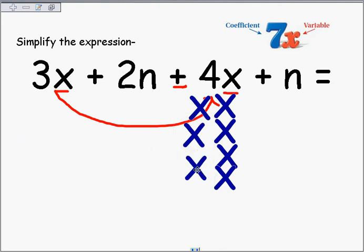And I'm combining them. So now I have 1, 2, 3, 4, 5, 6, 7. 7x. So I'll go ahead and write that part down.